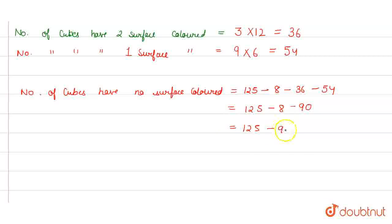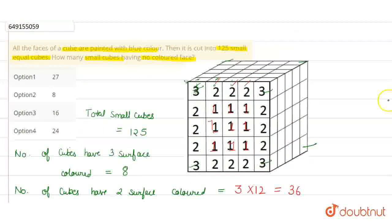125 minus 98. How much will this be? 27. There are 27 cubes with no colored surface. This is correct. Option 1 is 27. Thank you.